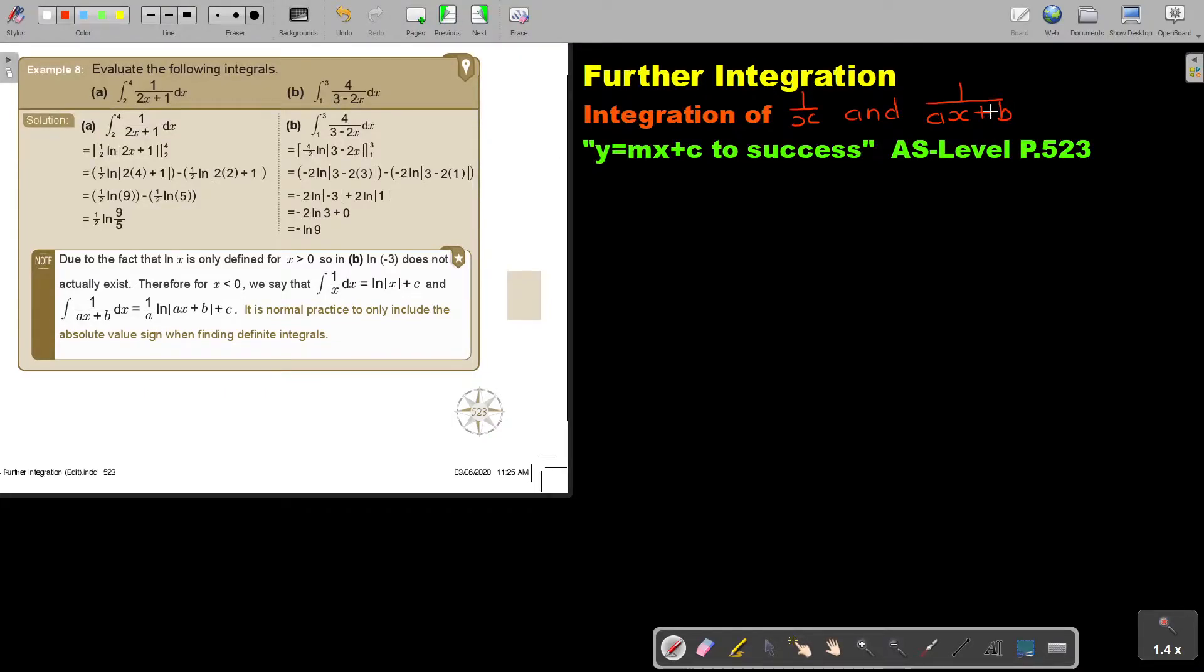In this video, we will continue with integration of 1 over x and 1 over ax plus b. You will find this on page 5 to 3 in the Namibia AS level mathematics textbook y equals mx plus c to 6s.